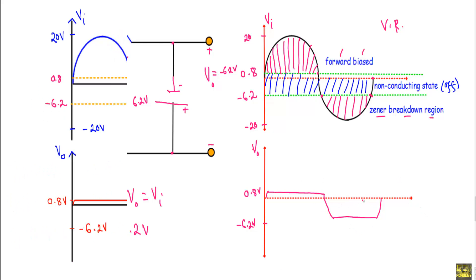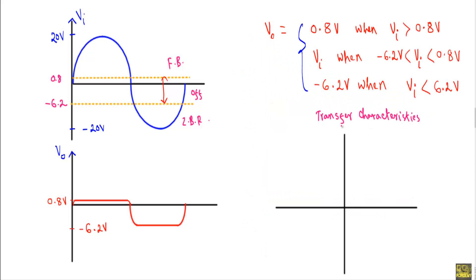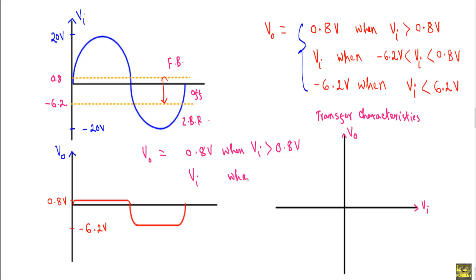Now I will show you how to draw the transfer characteristics of the given network. I will take the output on the Y-axis and input on the X-axis. The transfer characteristics represent the relation between output and input. We know that Vo equals 0.8V when Vi is greater than 0.8V; Vo equals Vi when Vi is between -6.2V and +0.8V; and Vo equals -6.2V when Vi is less than -6.2V.